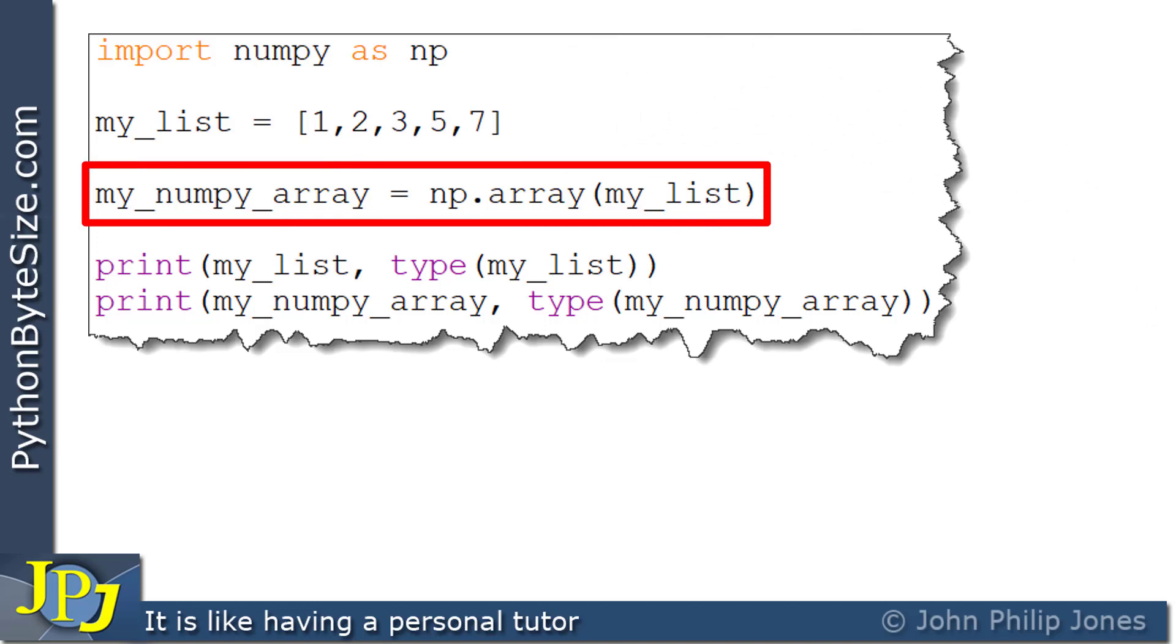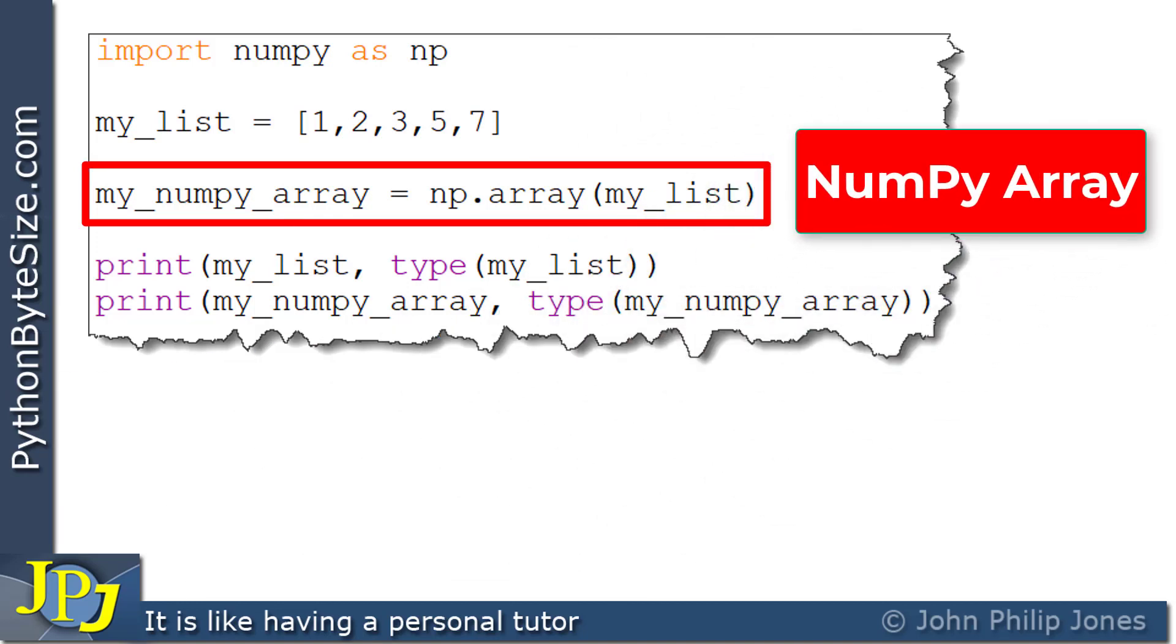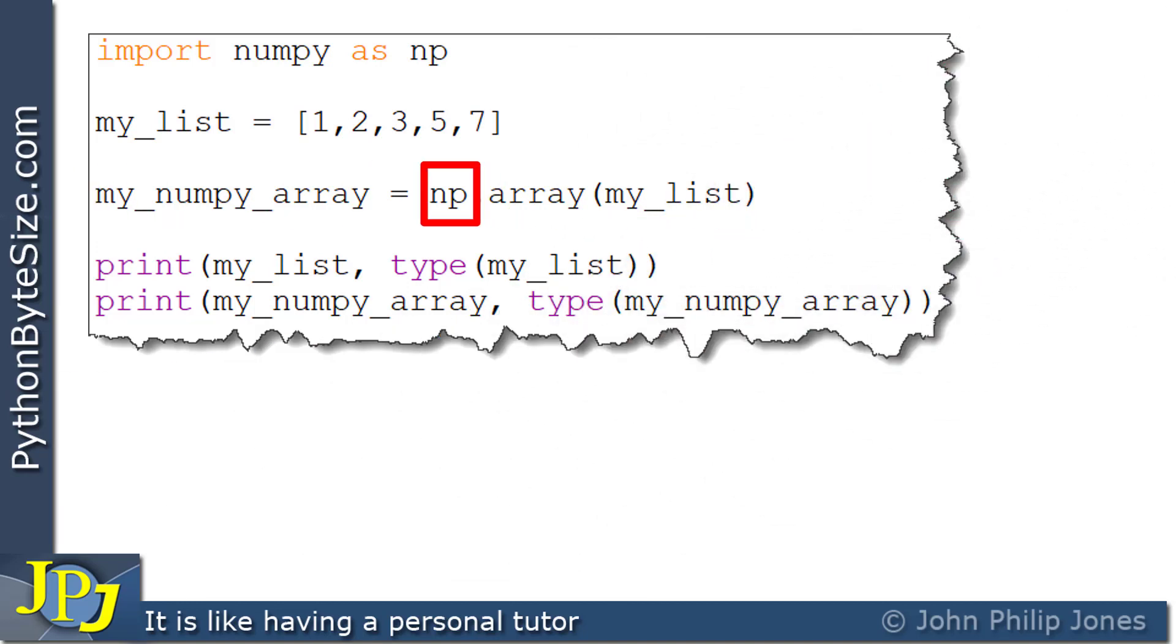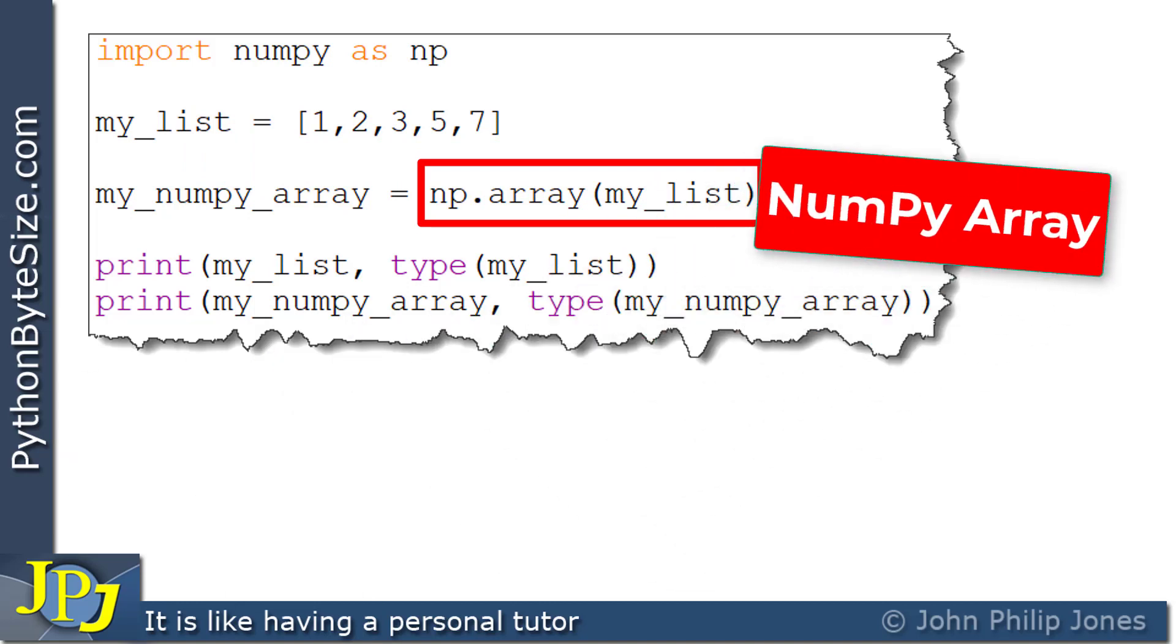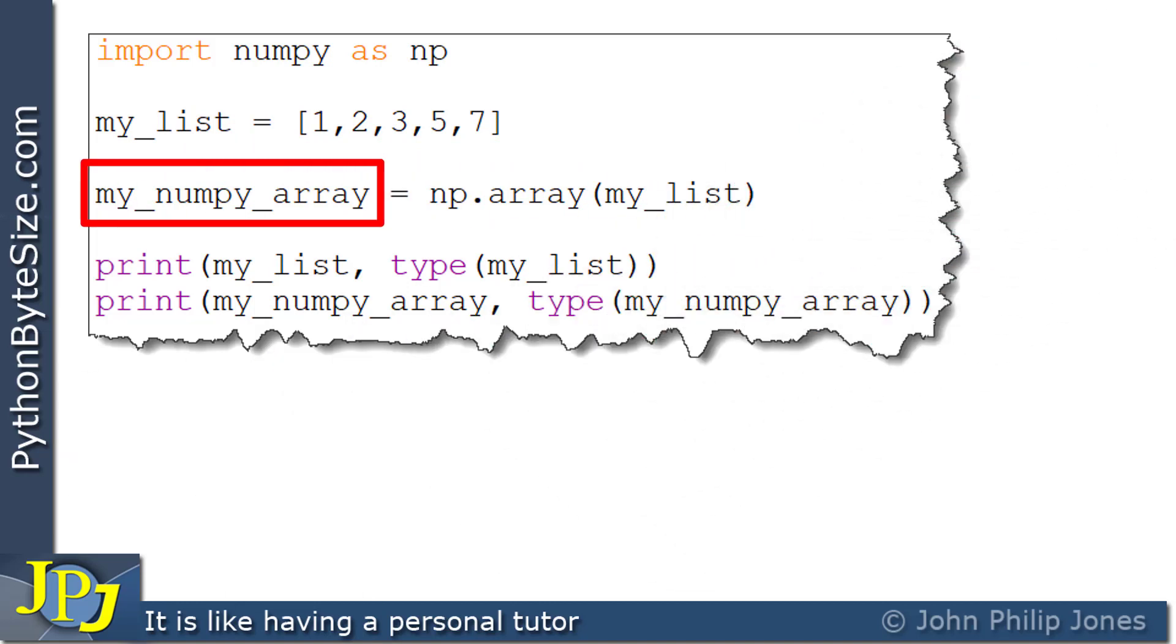Now, this line creates a numpy array. You can see that we are using np, which is the alias that we defined on this line here. I'm invoking this array and passing to it my_list, which was the Python list created on this line. So this will create a numpy array that's assigned to this name here. So this now is the name that references an instance of the numpy array.